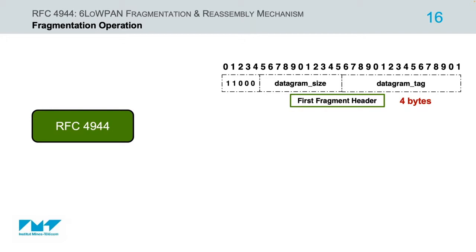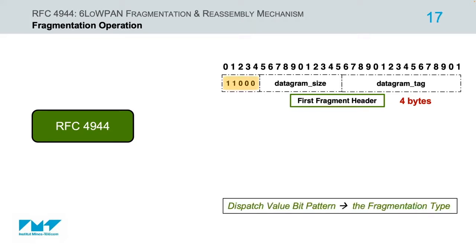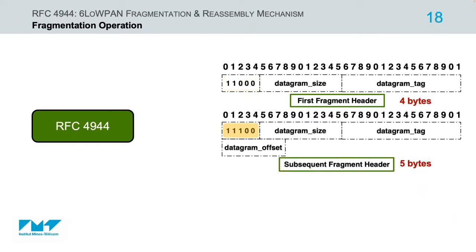The fragmentation type and header format for the first link-layer fragment uses a five-bit dispatch value bit pattern equal to 11000, representing the first fragment of an IPv6 datagram. For the second or subsequent fragments, the first five bits are equal to 11100.